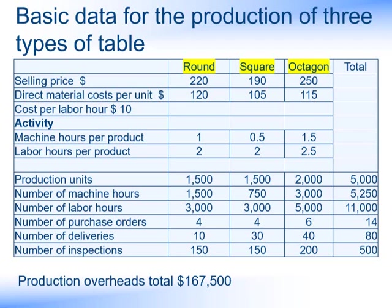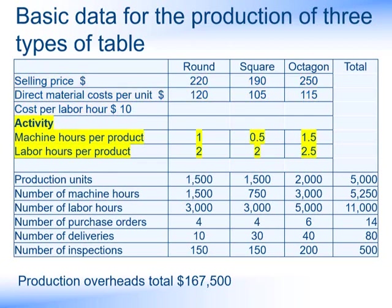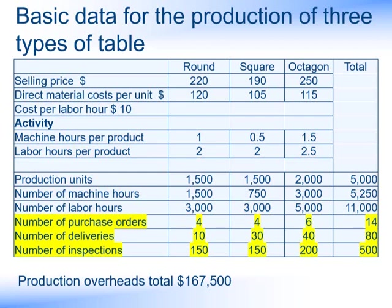Let's assume we're producing a type of table that could be round, square or octagonal in shape. We're given some basic information such as the selling price, the direct materials cost per unit, and also the cost per labour hour. We're also given information about the number of machine hours and the labour hours used for each product, as well as the production units for each product. By multiplying these by the machine hours and the labour hours per product, we can calculate the total number of machine hours and the total number of labour hours used. We can then use this when calculating our single overhead absorption rates. Finally, we're given some activities based on purchase orders, deliveries and inspections for each product, and we're also told that the production overheads total $167,500.